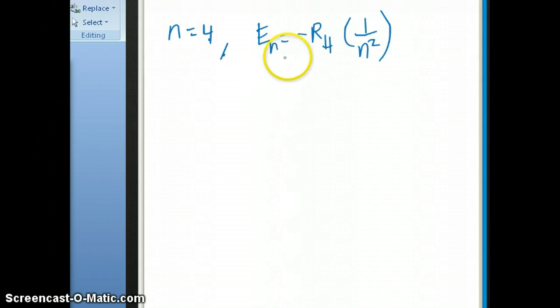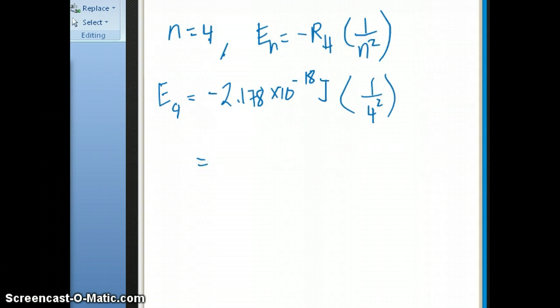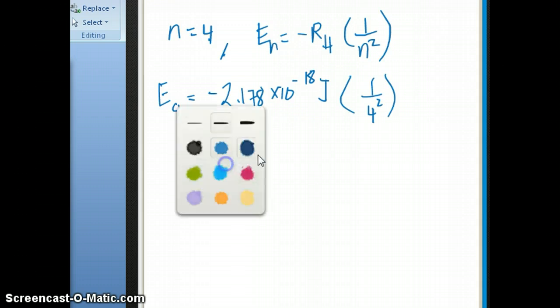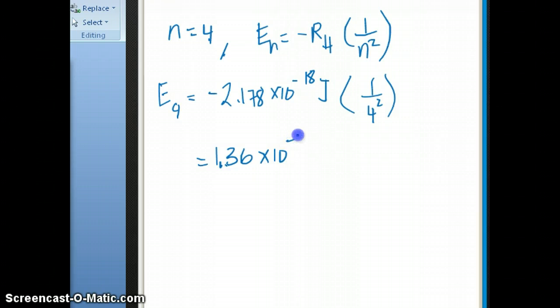It's really just a matter of plugging it into this equation, so E of 4 would be equal to negative RH. Because we're talking about energy, the value of RH we want to use is 2.18 or 2.178, depending on how many sig figs you want. So joules is the Rydberg constant, and then 1 over N, N in this case is 4, so 1 over 4 squared. The value you're going to get is 1.36 times 10 to the minus 19 joules. That's the answer to the question.